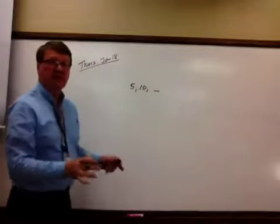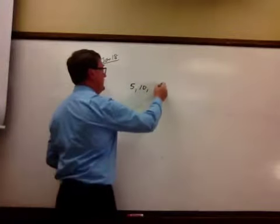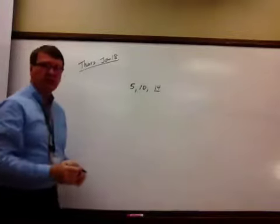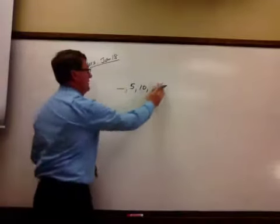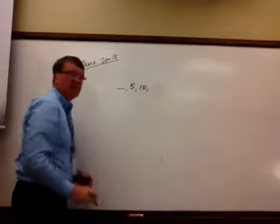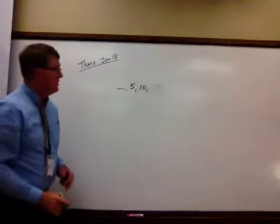10 plus 5, the biggest side it could be is 14. If you had a side of 14, you could make a triangle out of that. That's the biggest side. What about the smallest side? Let's say I gave you 5 and 10, and I want the smallest side.